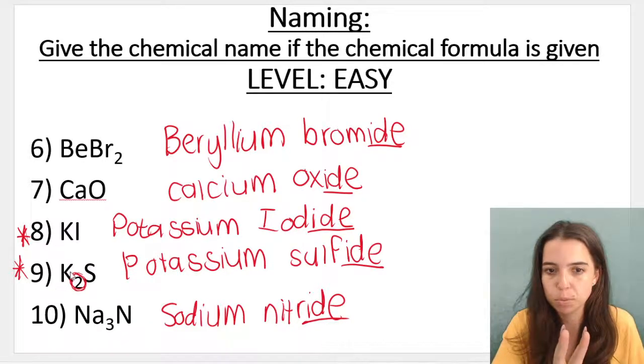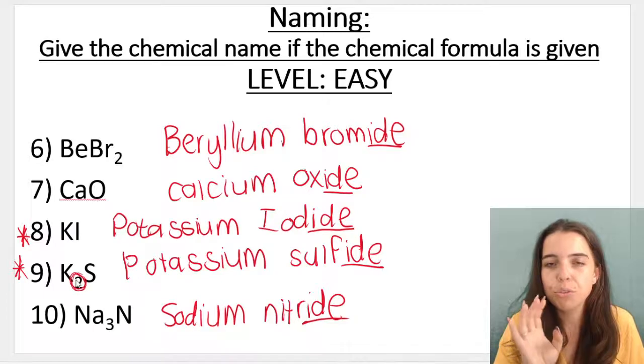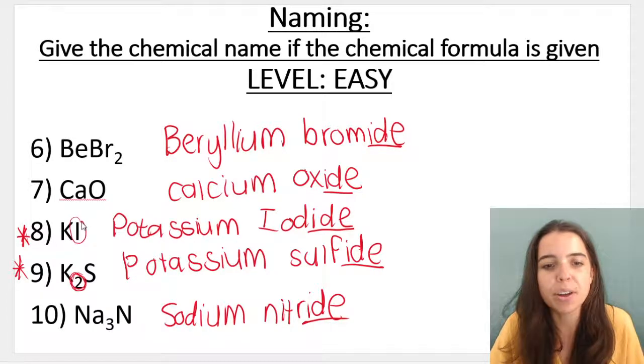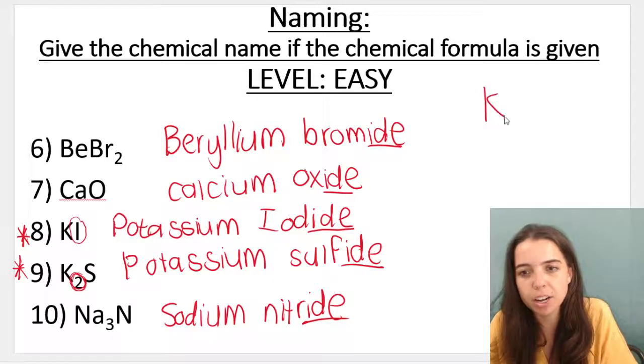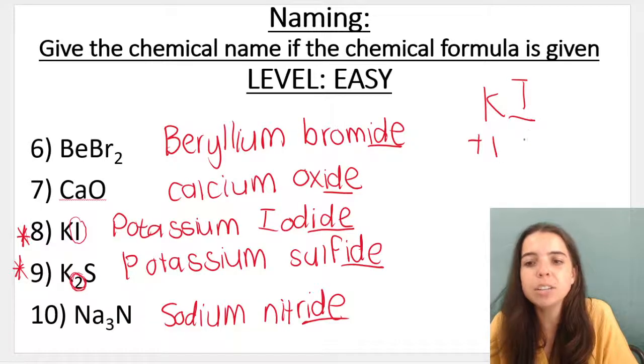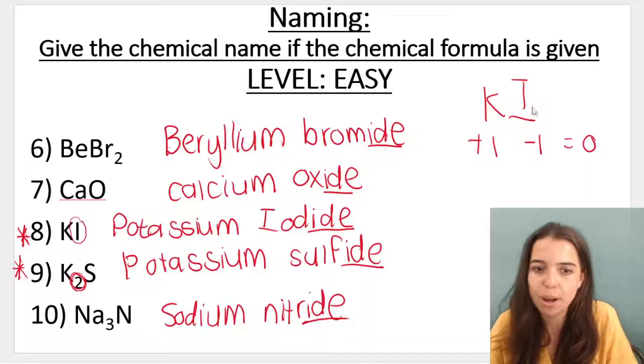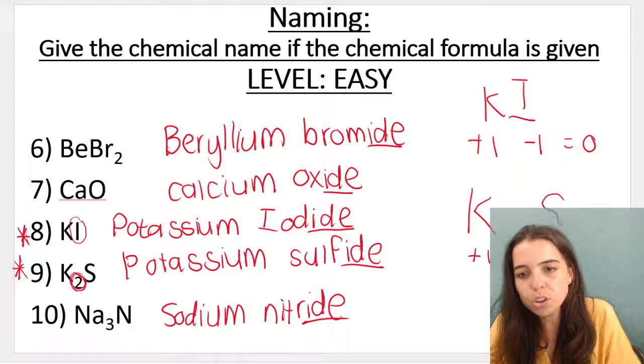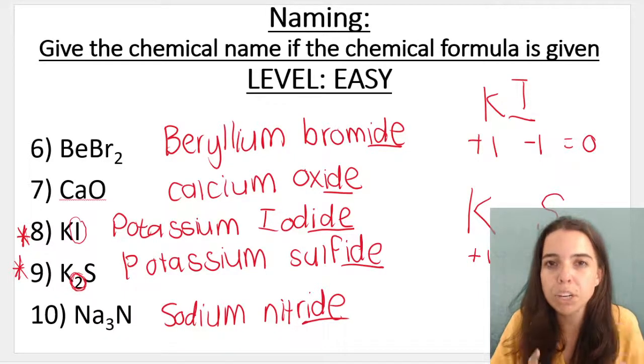In potassium sulfide, I've got two potassiums for every sulfur. The reason why it's different is because of the charge of the element that it's bonded with. So potassium iodide: potassium's charge is +1, iodine's charge is -1. That gives me zero, a neutral compound.